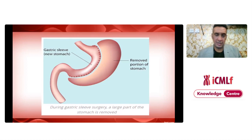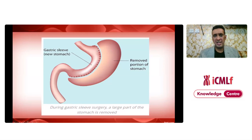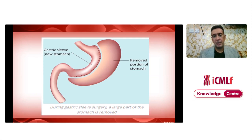The other procedure is sleeve gastrectomy, where a large part of the stomach is removed and a small part remains. When we perform a sleeve gastrectomy, the absorbent surface for medications is reduced. Reducing the absorbent surface means the pharmacokinetics and pharmacodynamics of medications will definitely be affected. Additionally, transit time will also increase, further impacting pharmacokinetics and pharmacodynamics.